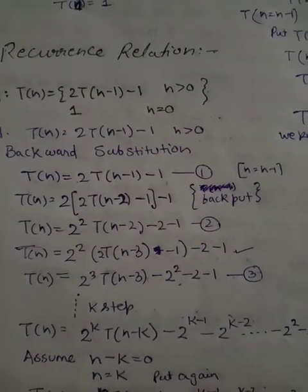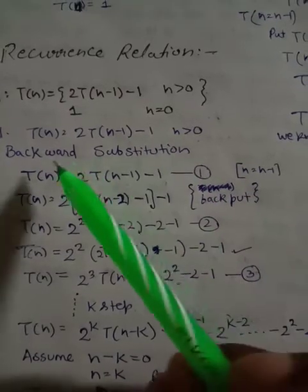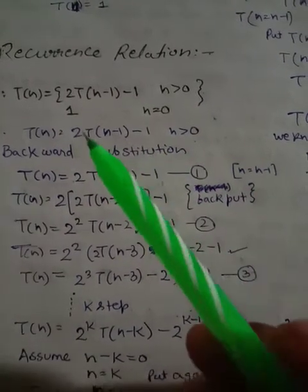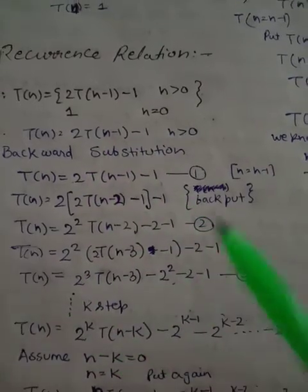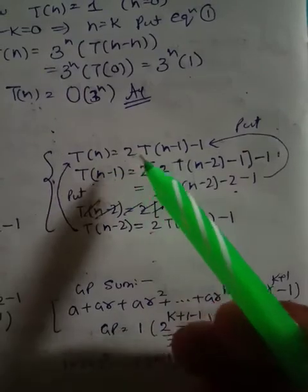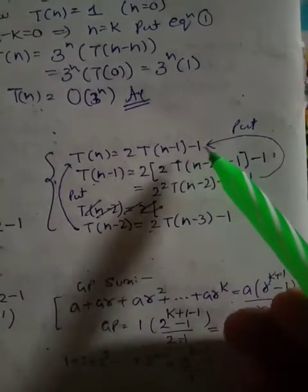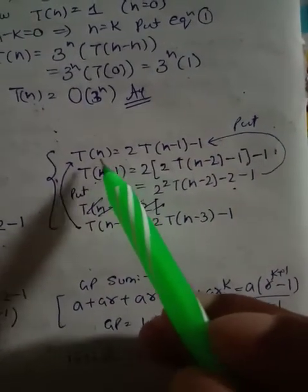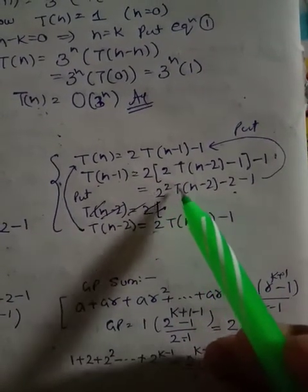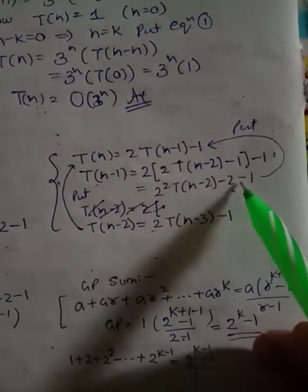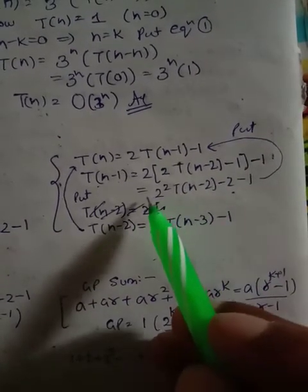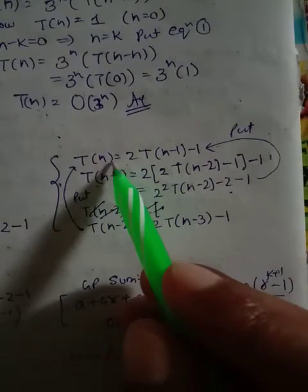We solve this using backward substitution. First, T(n) = 2T(n-1) - 1. We substitute n-1 in place of n to get the relation: 2² · T(n-2) - 2 - 1.